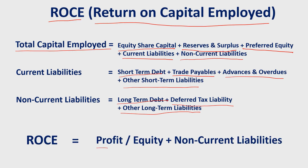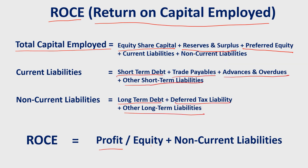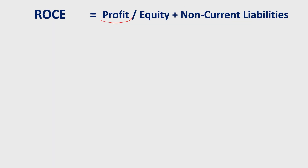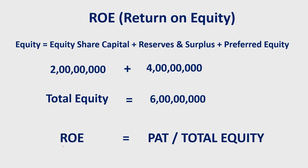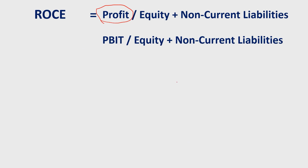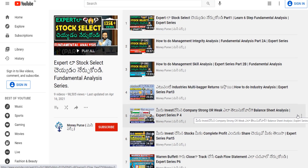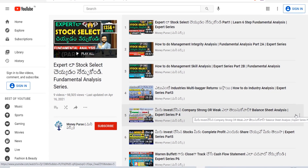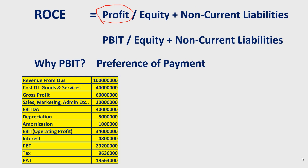Now, the return on capital employed formula is: EBIT (profit) divided by equity plus non-current liabilities. The denominator is total equity — which includes shareholder capital and reserves and surplus — plus non-current liabilities, representing long-term liabilities. For profit, in ROCE we use EBIT or operating profit, unlike ROE where we use profit after tax. I will show you a sample Profit and Loss Statement to explain the payment preference order further.